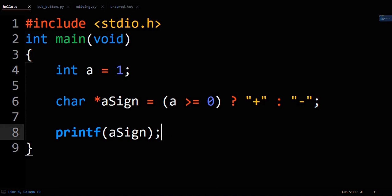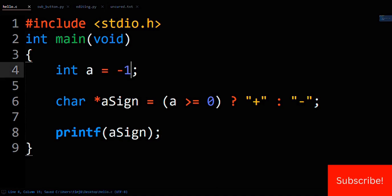If I were to change A to be negative, say A is now negative 1, then the ternary operator now evaluates like this. Is A positive? No. Then assign A's sign to be the negative sign.